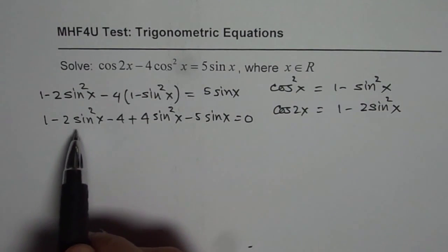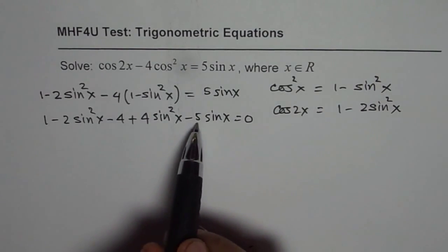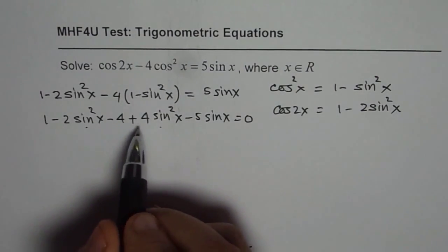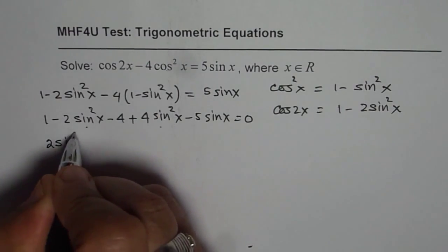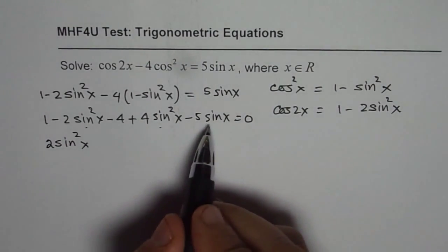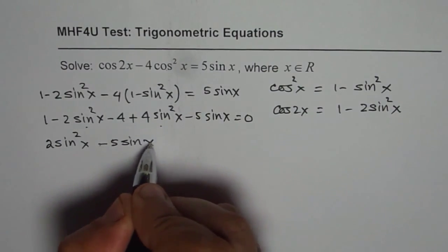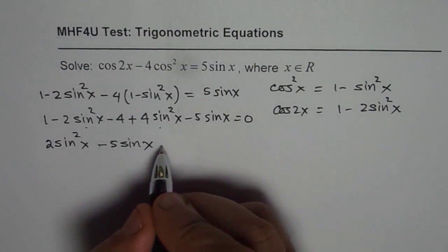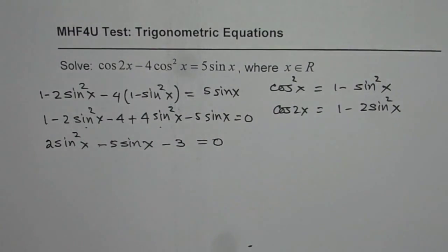Now we can combine the like terms. As far as sine square x is concerned, we have 2 sine square x. The sine x terms—there is one, which is minus 5 sine x. The constants are 1 and minus 4, which means minus 3 equals 0. So that is the equation which we have.